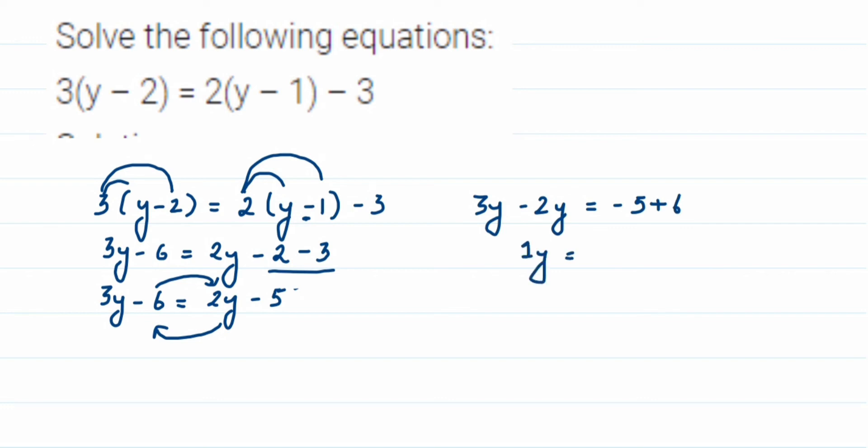3y - 2y is 1y, and -5 + 6 will be 1, like 6 - 5 is 1. So we can write 1y = 1, or you can just simply write y = 1. That's it, this is our answer.